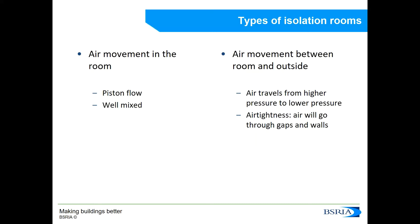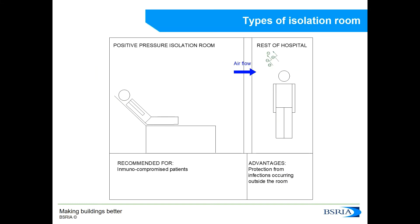When it comes to the relationship between the air in the isolation room and the rest of the hospital, air travels from higher pressure areas to lower pressure areas and will find any small hole to escape, even through the fabric of the walls. This is why air tightness is so important. What you can see here is how we use pressure differentials in a positively pressurized isolation room to protect an immunocompromised patient, making sure that air travels from the room into the rest of the hospital and not the other way around.